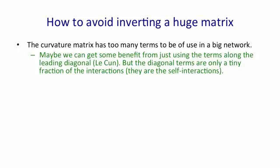One thing we can do is to just look at the leading diagonal of the curvature matrix and make our step size depend on that leading diagonal. That helps a bit. It will get us to make different step sizes for different weights. But the diagonal term is only a tiny fraction of the interactions. So we're ignoring most of the terms in the curvature matrix when we do that. In fact, we're ignoring nearly all of them.